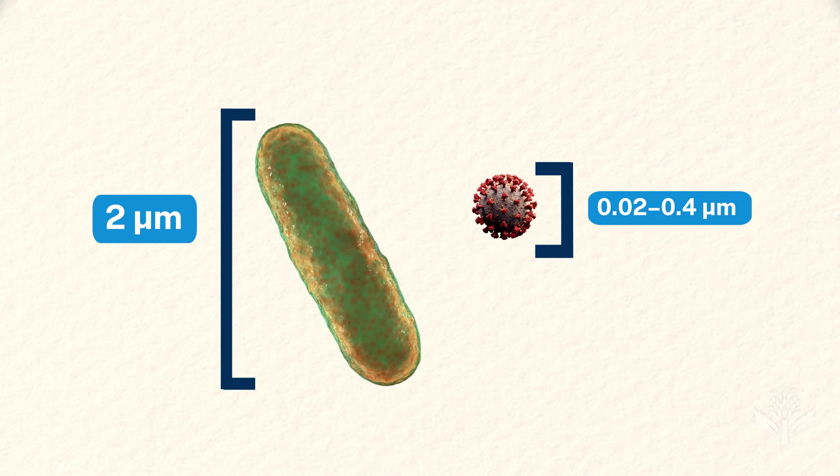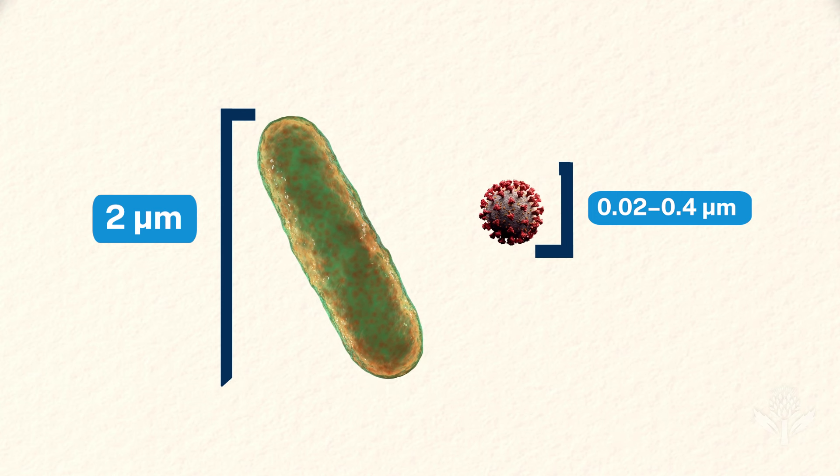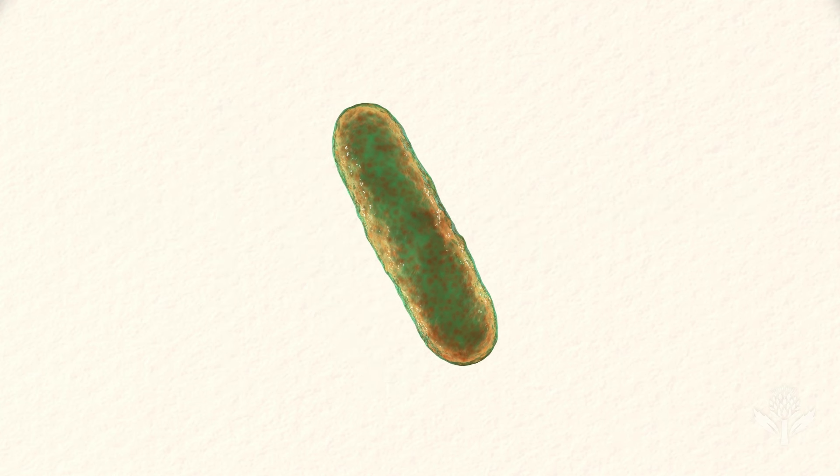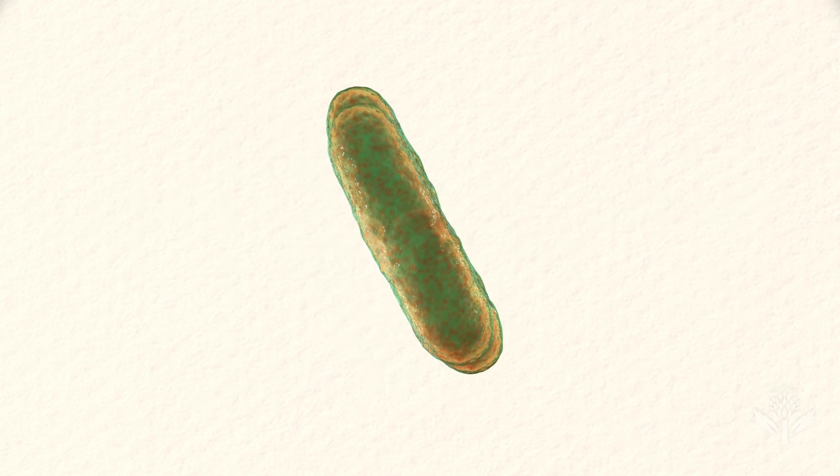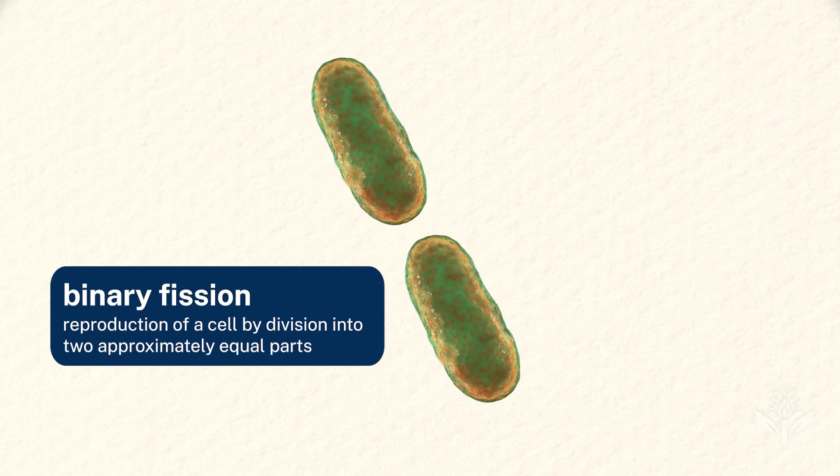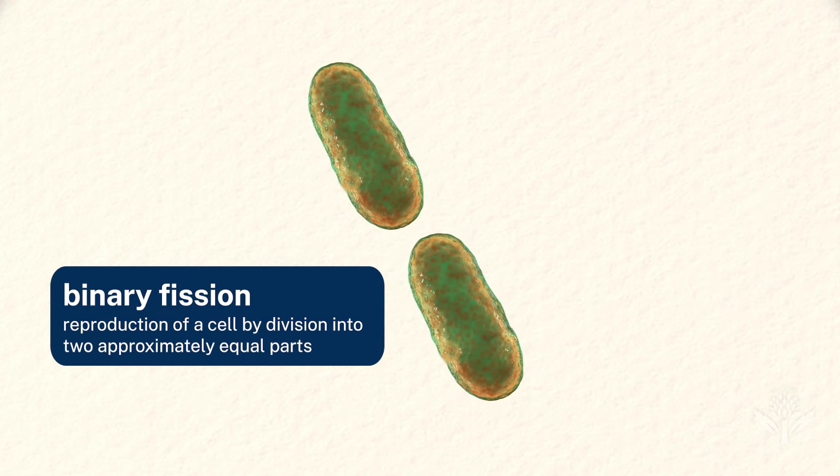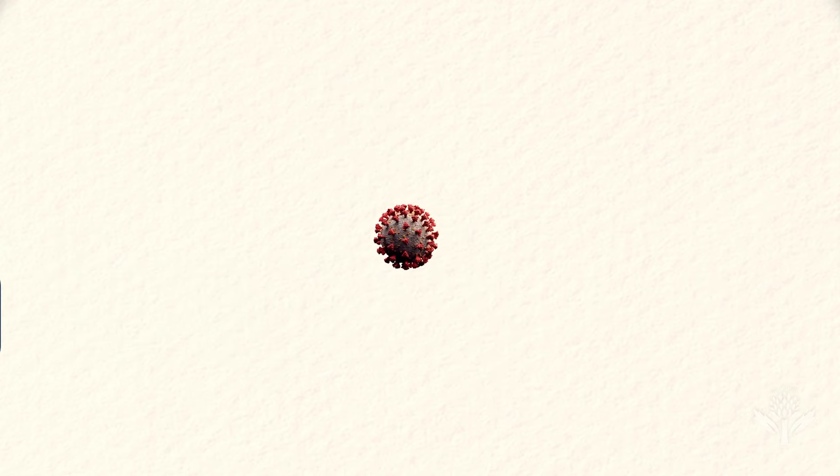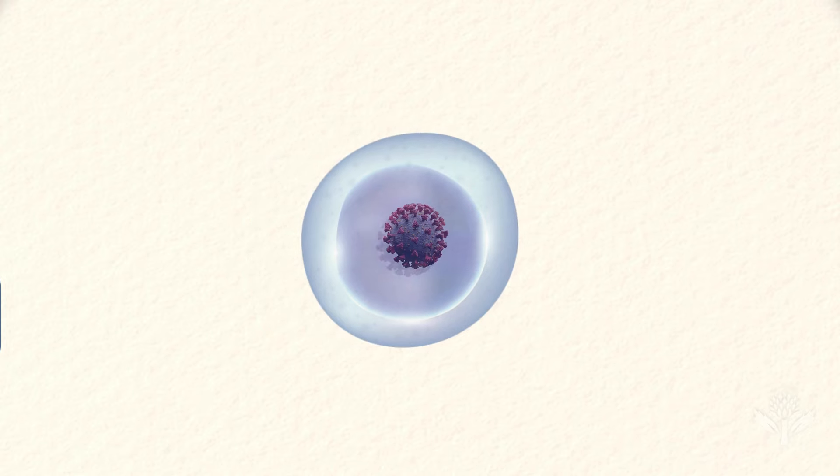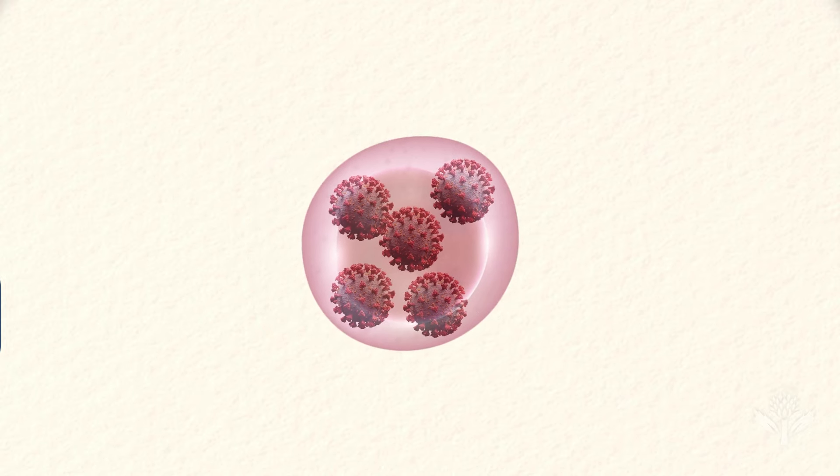Too small to be seen with normal microscopes. As living creatures, bacteria can reproduce on their own, typically through binary fission. For viruses to replicate, they must hijack a living cell and force it to produce new copies of virus.